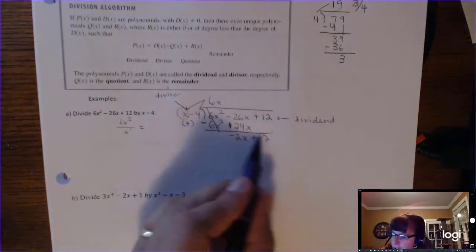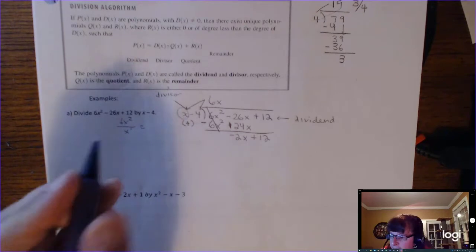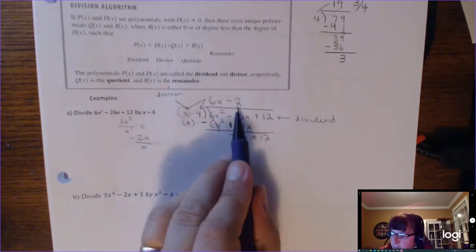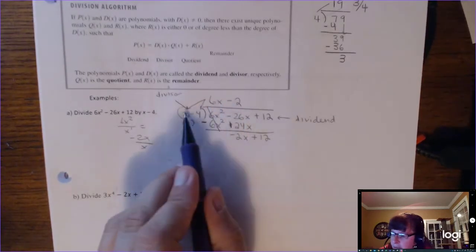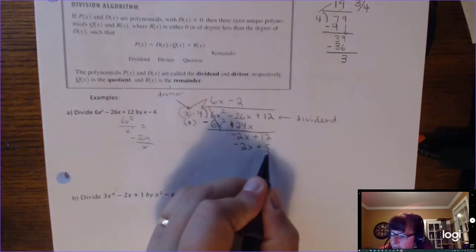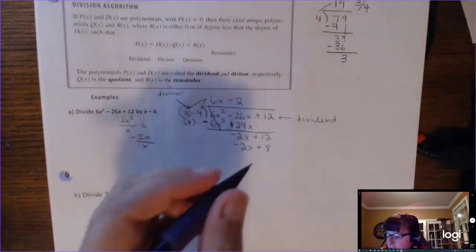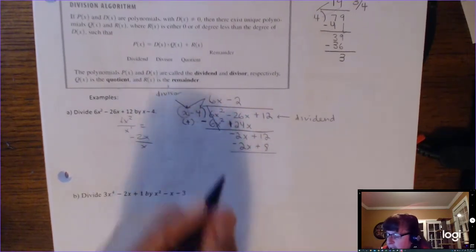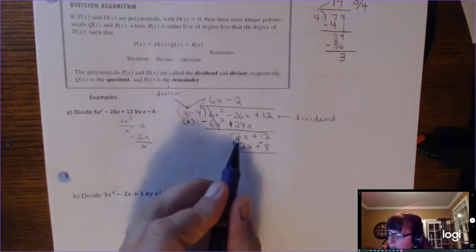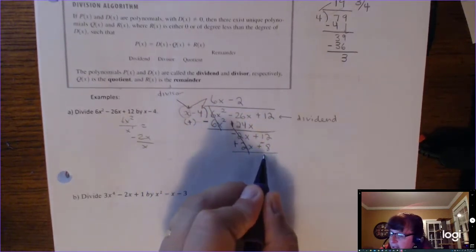You have a new expression underneath the line and you start over. Negative 2x divided by x is negative 2. Then multiply: make sure you multiply both terms. Negative 2 times x is negative 2x, and negative 2 times negative 4 is positive 8. After you multiply, draw your line and change the signs — distributing the minus. Negative 2x plus 2x: gone. 12 plus negative 8 is 4.